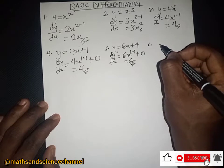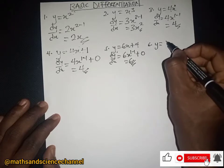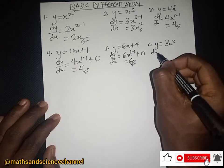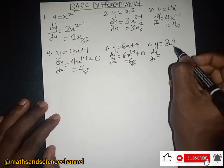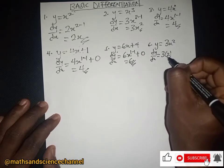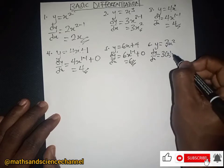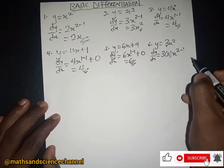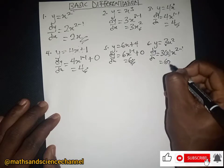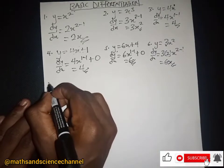Now let's say y equal to 3x squared. The dy/dx will be equal to — we drop the exponent down so it multiplies the 3, then we subtract one from the exponent — and we are just going to get 6x.